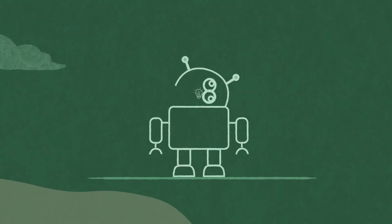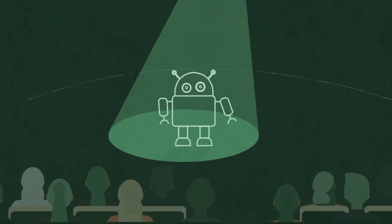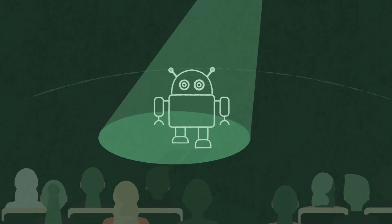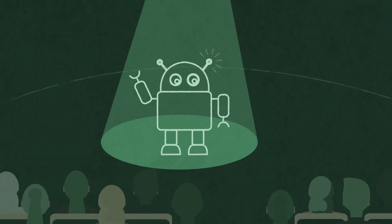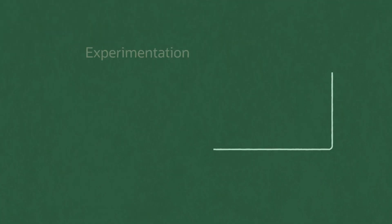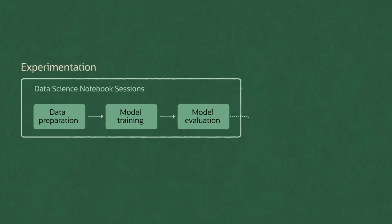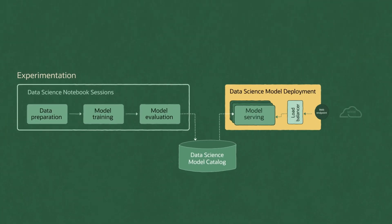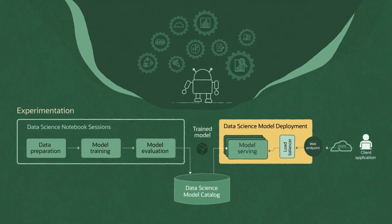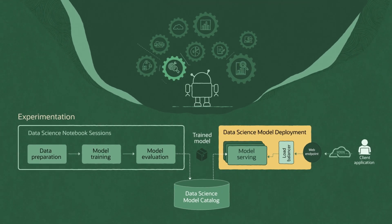After the model evaluation shows that your model is ready for production, you can make it accessible to anybody who needs to use it. Using managed model deployment, deploy models as HTTP endpoints, so that your models can deliver predictions on new data in real time.